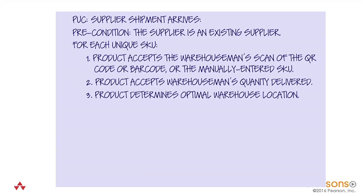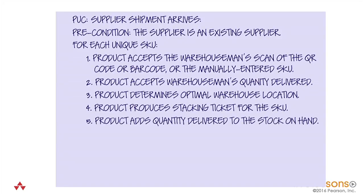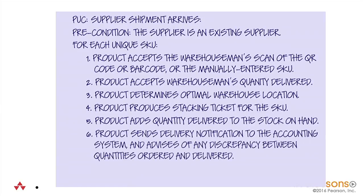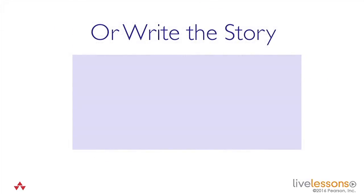I'm demonstrating this functionality that my product's going to have. The product produces a stacking ticket for the SKU so the warehouseman knows where to put it. It adds the quantity to the stock on hand so we know what we've got. It sends a delivery notification to the accounting system and advises of any discrepancy between the quantity ordered and delivered, so we can go ahead and pay the supplier's invoice. And that's the end of that one.